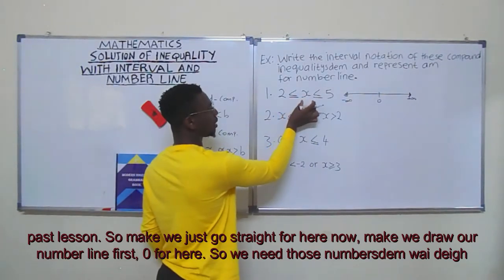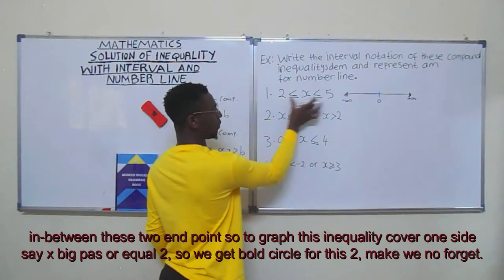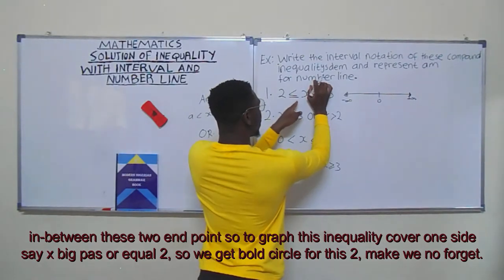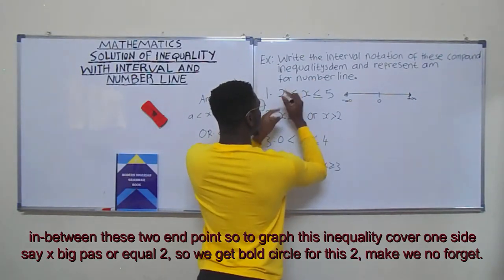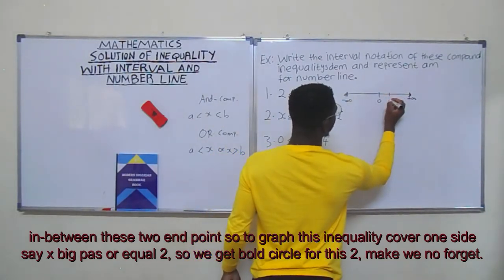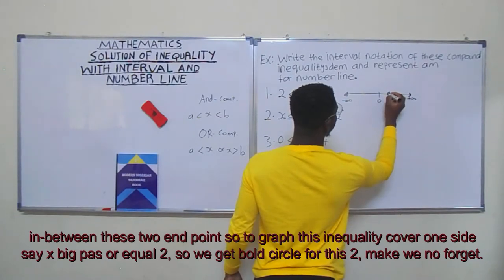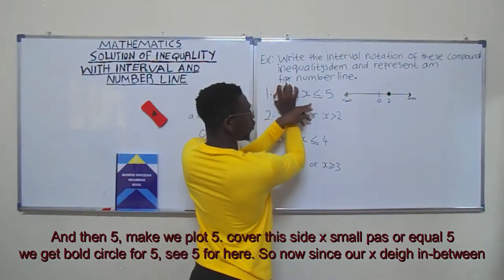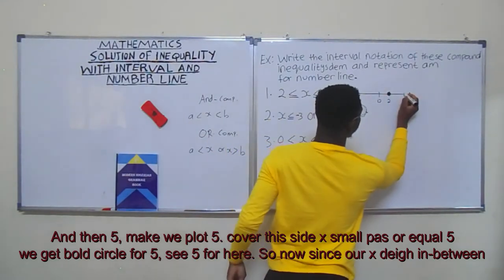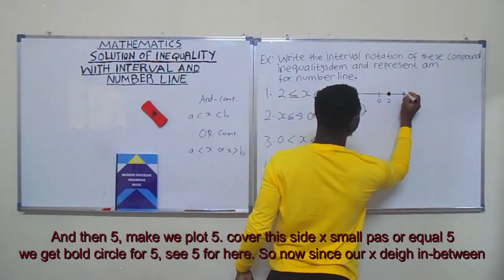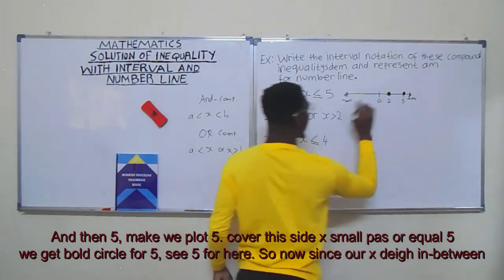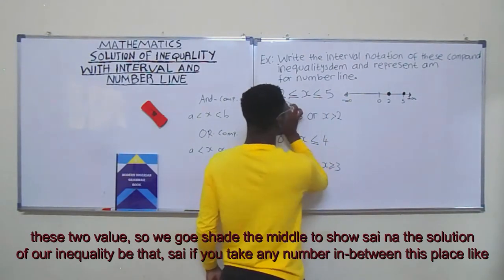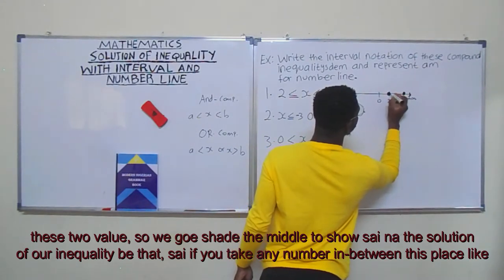We need those numbers that are in between these two endpoints. To graph this inequality, we cover one side: since x is greater than or equal to two, we get a closed circle for two. Then we plot five — since x is less than or equal to five, we get a closed circle for five as well. Since x is in between these two values, we shade the middle.